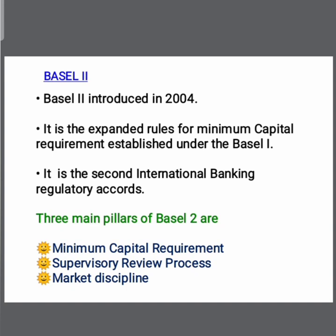The second pillar is the supervisory review process. Banks conduct an internal capital adequacy assessment process called ICAAP. This is then reviewed by the central bank through the supervisory review and evaluation process, known as SREP, carried out by the RBI.